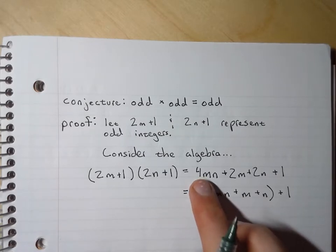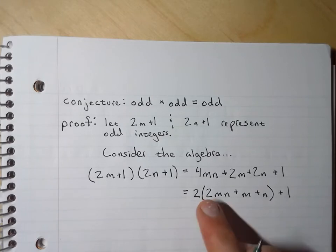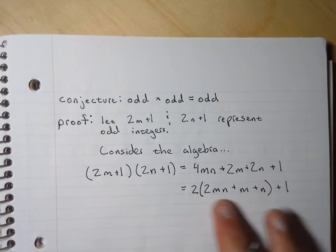That 4 is a 2 times 2 in disguise. Now that algebra is pretty much done.